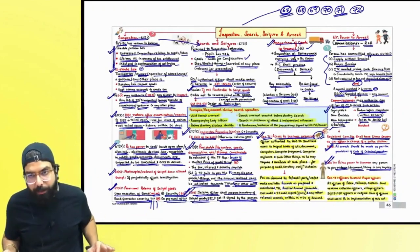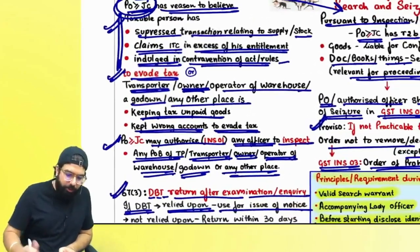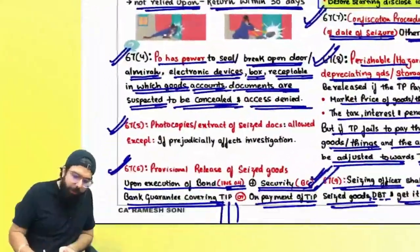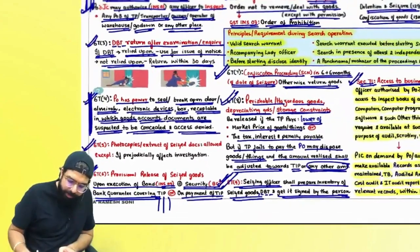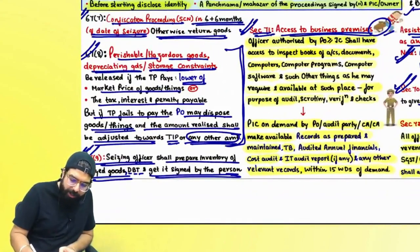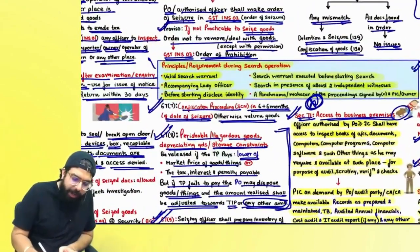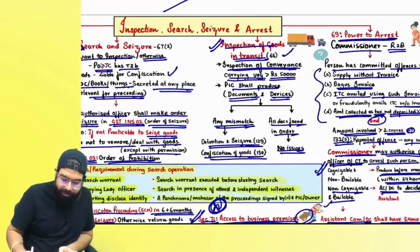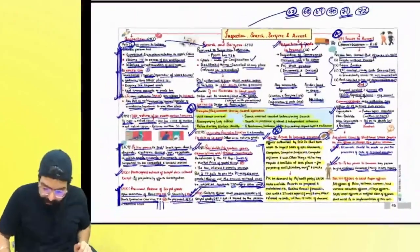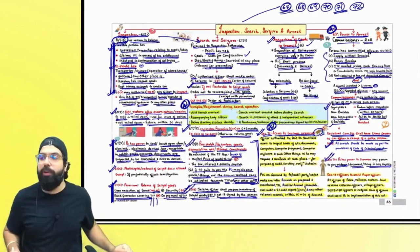Inspection, search and seizure is a C-graded topic. But they can ask: who can order inspection — proper officer greater than or equal to joint commissioner. What are the reasons inspection can happen. What are the powers of the officer during search and seizure. How provisional release of goods can be done. Treatment of perishable and hazardous goods. A short note on access to business premises. Principles or requirements during search operation. And the officer's power to arrest. Congratulations, people — this concludes inspection, search and seizure.